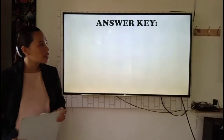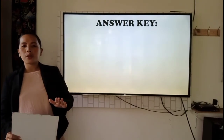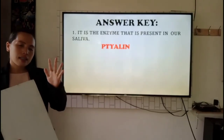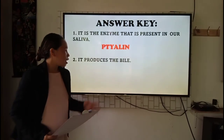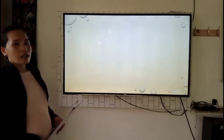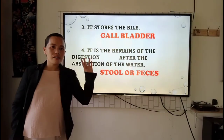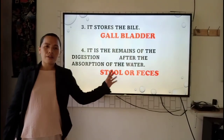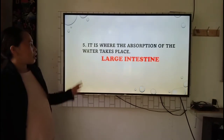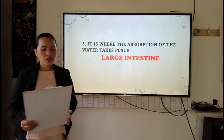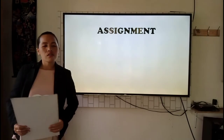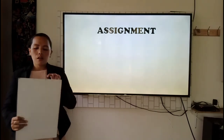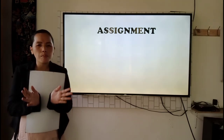Time's up. Let us check your paper — exchange your papers with your seatmate. For number one, the answer is ptyalin. Number two, the answer is the liver. Number three, the answer is the gallbladder. Number four, it is our stool. And number five, it is the large intestine. Tally your score and let me know if you have a high score. Most of you got a high score, so let us give a round of applause to everyone.